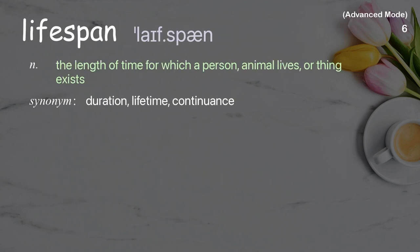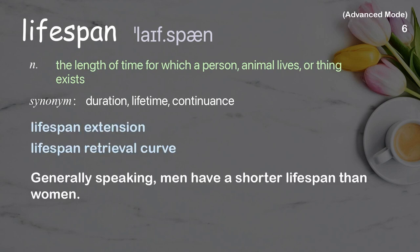Lifespan: the length of time for which a person, animal, or thing exists. Examples: lifespan extension, lifespan retrieval curve. Generally speaking, men have a shorter lifespan than women.